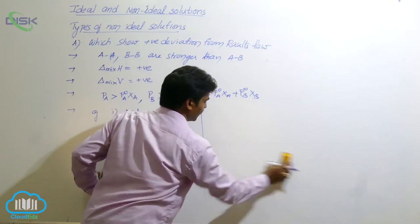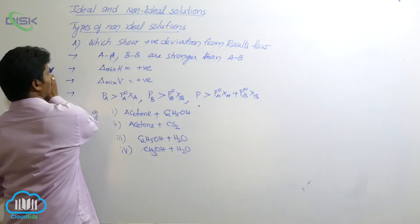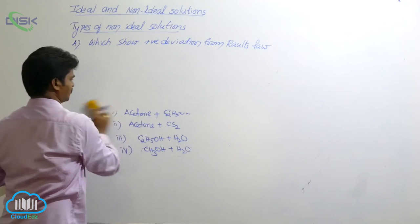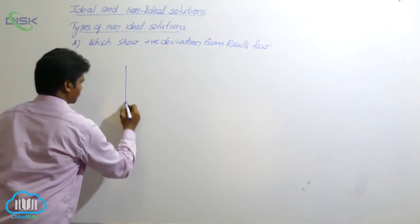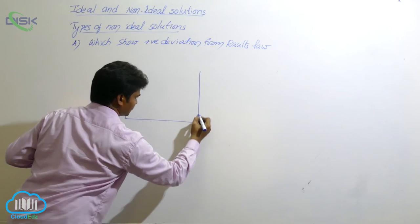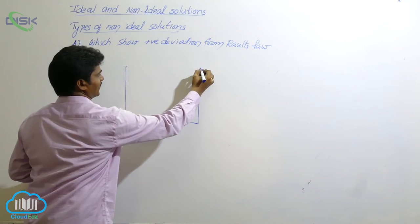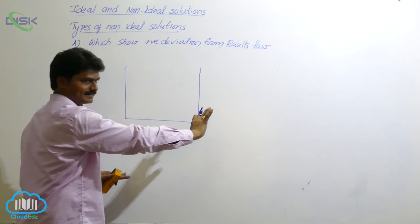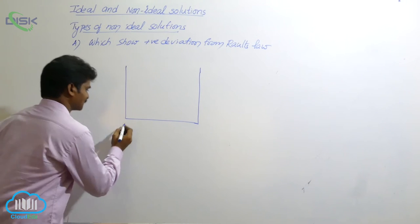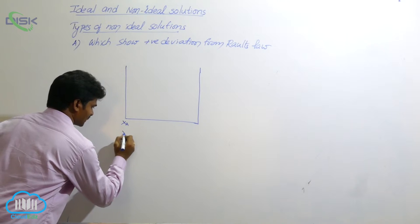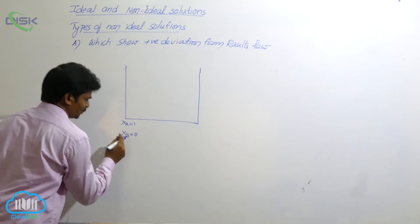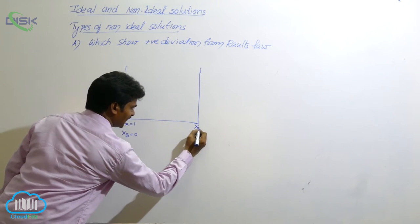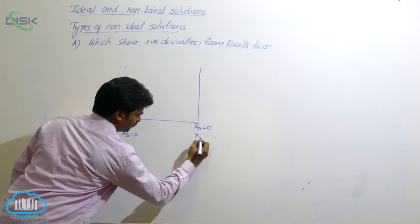Now let's see the graph related to positive deviation. Along the y-axis, we take vapor pressure or partial pressure values; along the x-axis, mole fraction values. At the left end, xA = 1 and xB = 0, meaning only component A is present. At the right end, xA = 0 and xB = 1, meaning only component B is present.